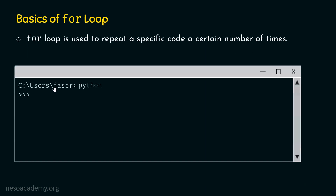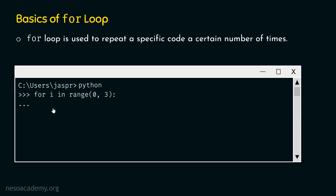Let's open our command prompt and activate the Python interactive shell. To understand how for loop works, we will consider a simple example. Let's type this command: for i in range, then colon. Let's type the next statement first and then we will understand how this works. Let's hit enter. We will get three dots, which means we need to write at least one statement within this for loop. We first have to add an indentation and then type: print hello world.